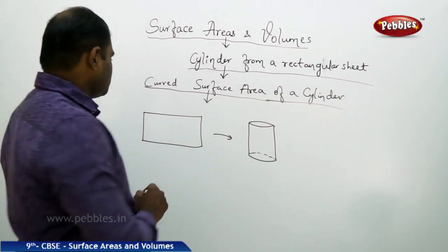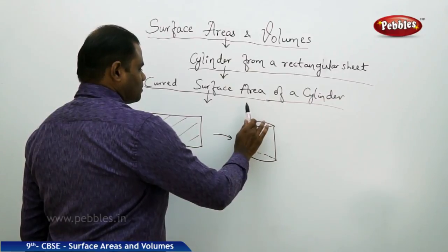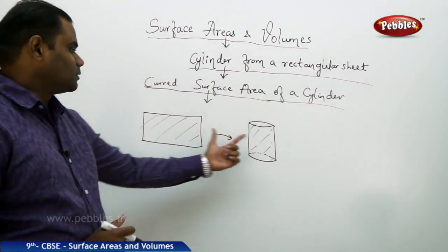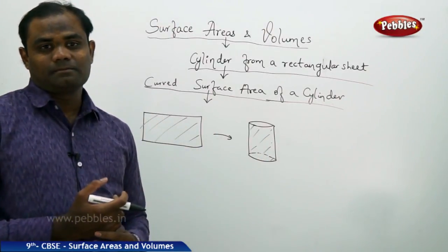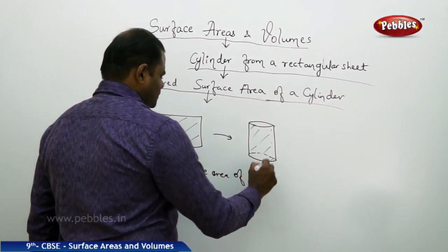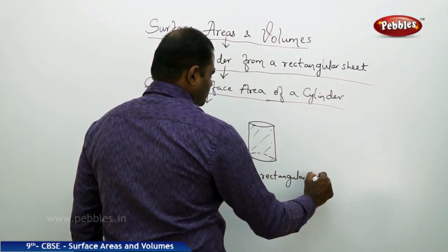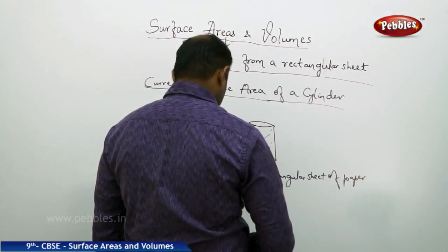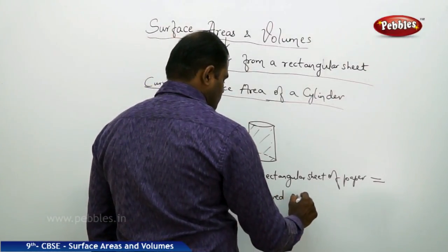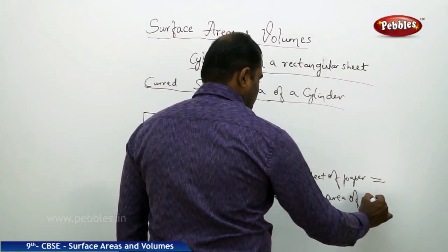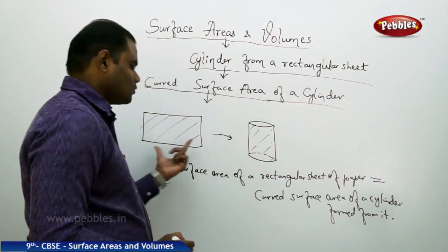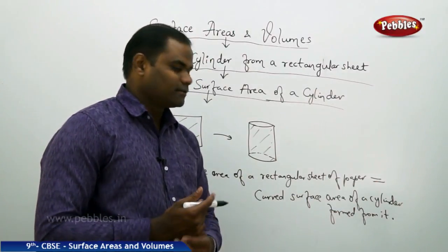The same area as occupied by the sheet of paper will be the same area as occupied by the curved region of the cylinder. This is how we understand: the same sheet of paper occupies the same surface area when it forms a cylinder. Therefore, the surface area of the rectangular sheet of paper is equal to the curved surface area of the cylinder.